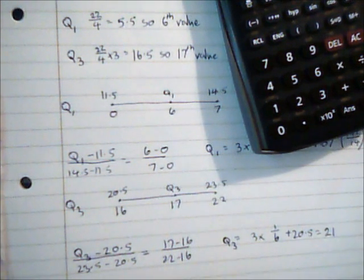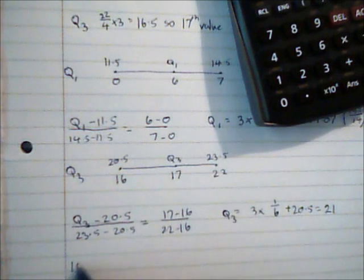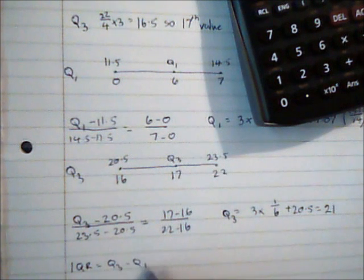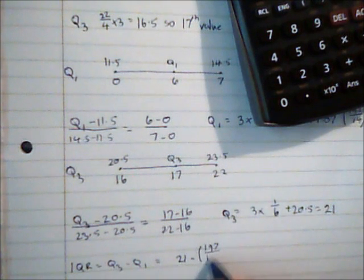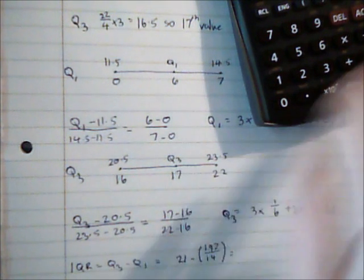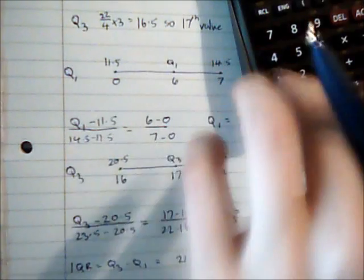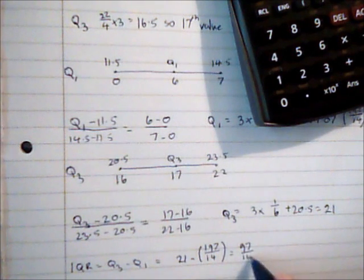So then I can work out the interquartile range. So the interquartile range is Q3 minus Q1. So it's 21 minus, and I'm going to use my exact value that I had. That gives me 97 over 14, which is then 5.93.